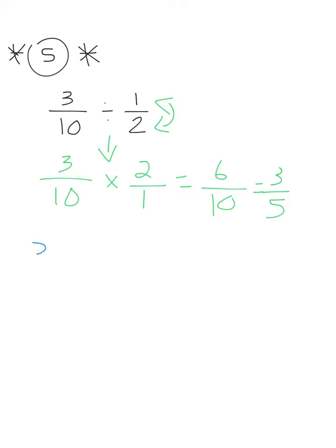Now we do have a situation where you could divide straight across and look what happens. 3 divided by 1 is 3, 3 divided by 1 is 3 and 10 divided by 2 is 5. So this actually works.